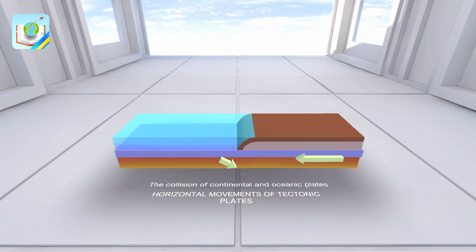When tectonic and oceanic plates collide, the oceanic plate sinks into the mantle. The consequence of such a collision will be the formation of oceanic trenches.